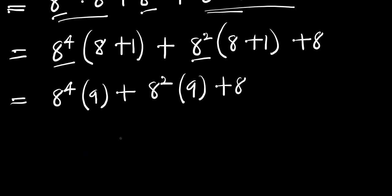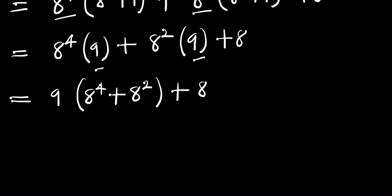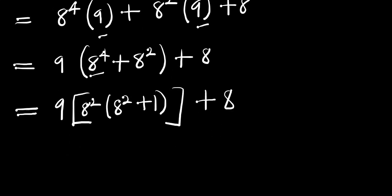Now we have 9 that is common, so we factor 9 out. We have 9 times 8 to the power of 4 plus 8 to the power of 2, plus 8. Next we can rewrite this as 9 times — we factor out 8 to the power of 2 — times 8 to the power of 2 plus 1, plus 8.